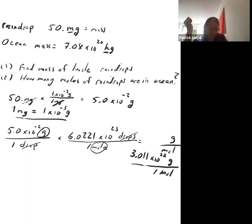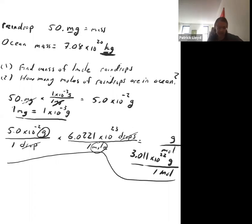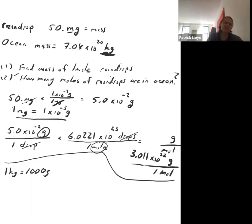Even though 3.011×10²² grams per mole is a very large number, let's compare it to the ocean. We need to convert the ocean's mass to grams so the units match.